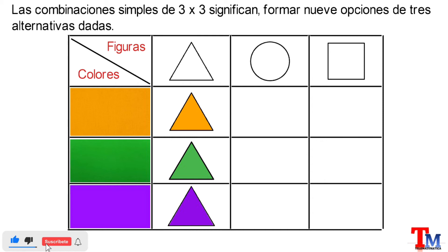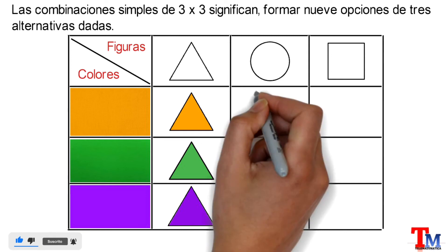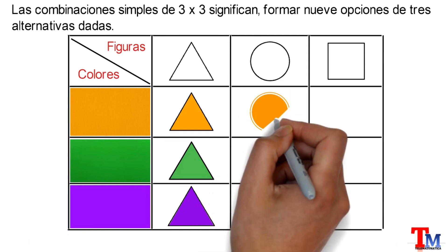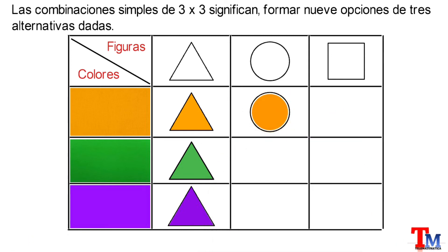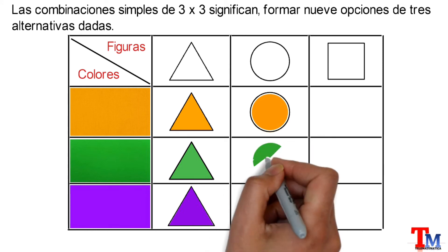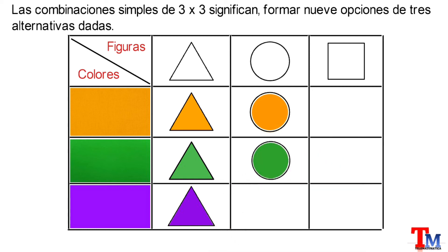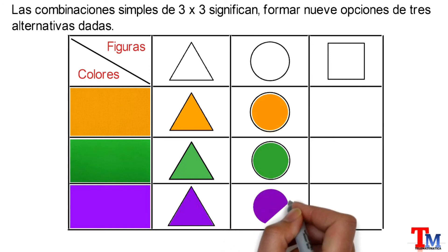De forma similar, procederemos para la siguiente columna. Combinando el color amarillo con el triángulo obtenemos... Combinando el color verde con el triángulo obtenemos... Y combinando el color amarillo con el triángulo obtenemos...